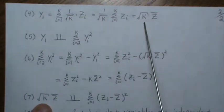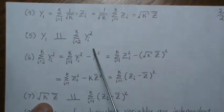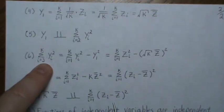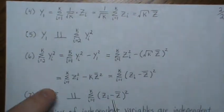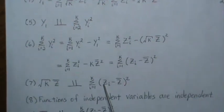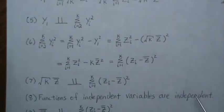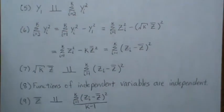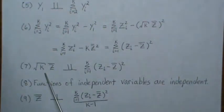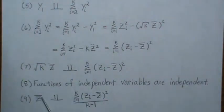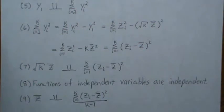We know y₁ = √k · z̄ is independent of the sum Σᵢ₌₂ᵏ yᵢ², which equals Σ(zᵢ − z̄)². Functions of independent random variables are independent — that's a fact we won't prove here. So a function of y₁ gives us z̄, and Σ(zᵢ − z̄)²/(k−1) is the sample variance. Therefore, the sample mean and sample variance are independent.